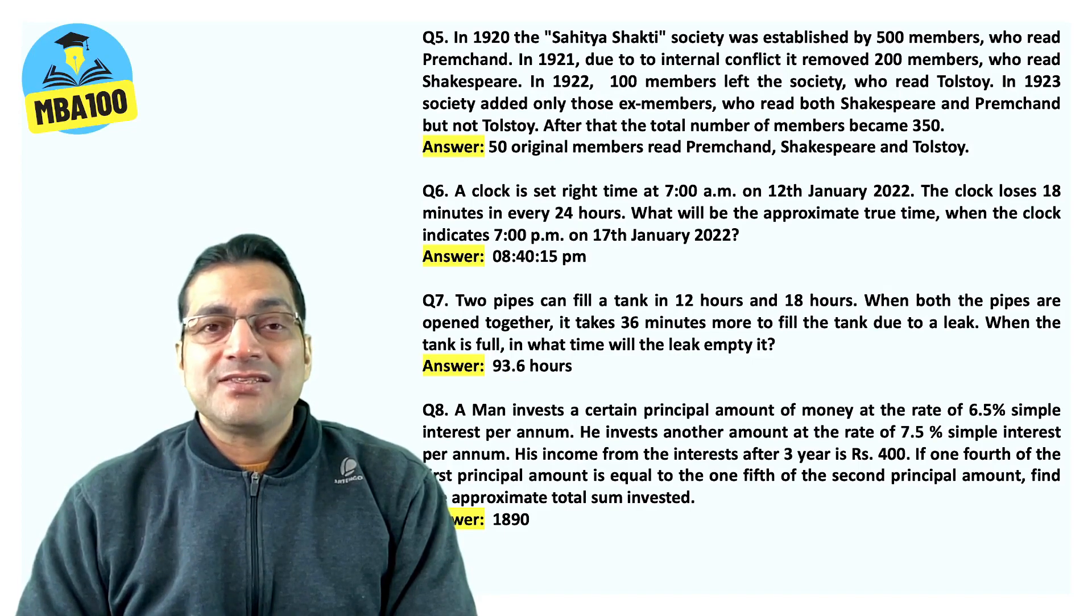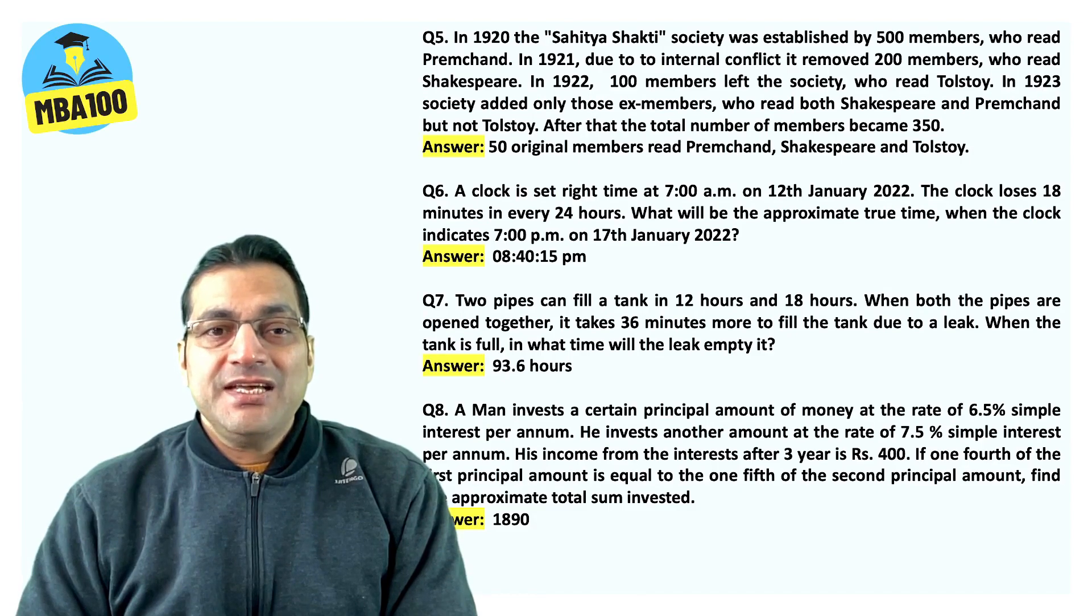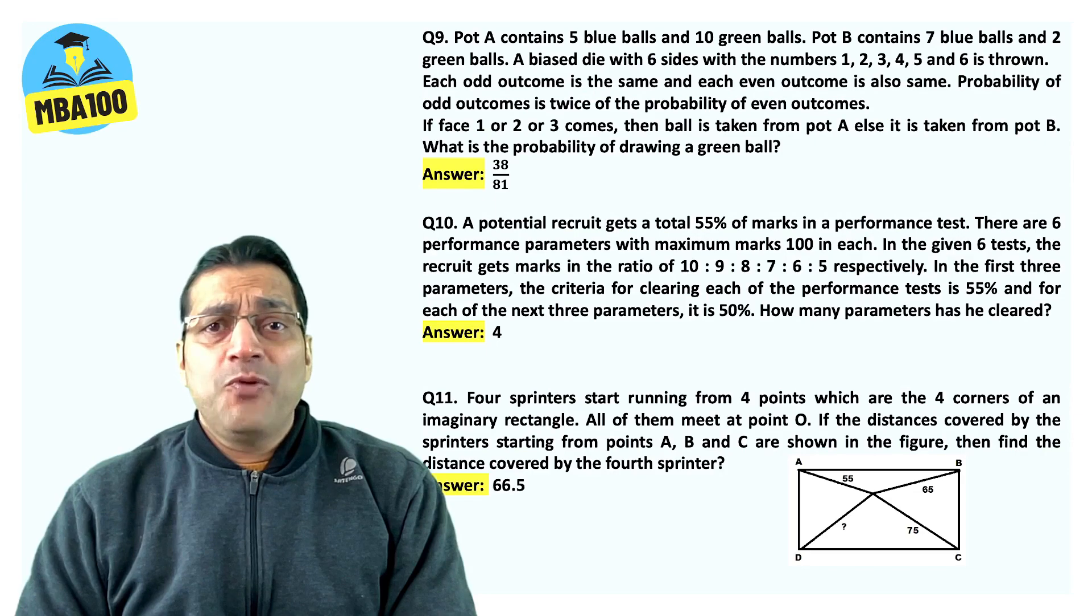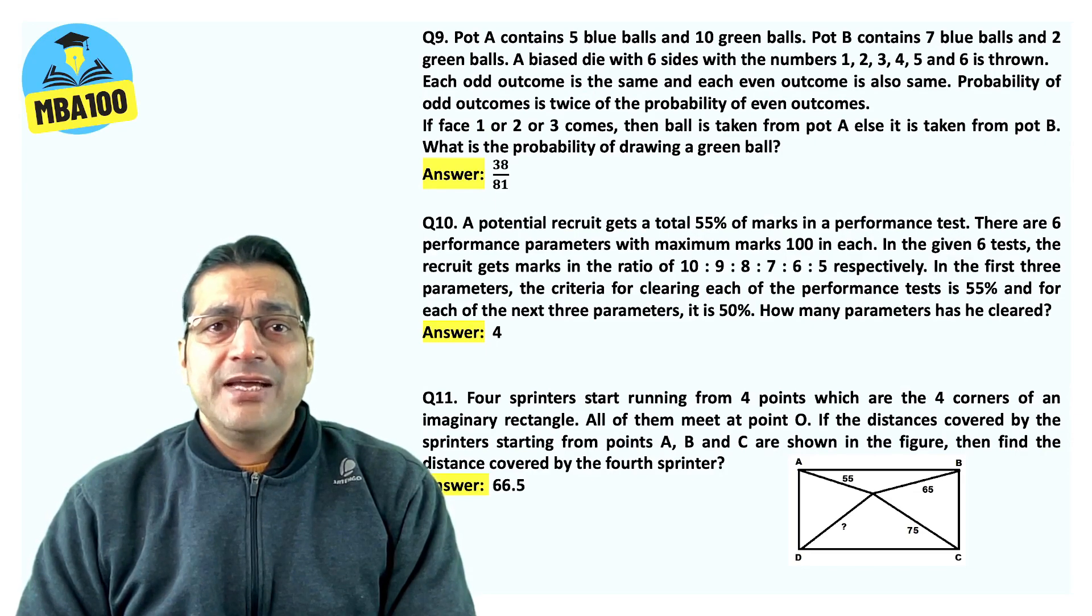A man invests a certain principal amount of money. Answer is 1890. Pot A contains five blue balls and ten green balls. The answer is probability 38 by 81.